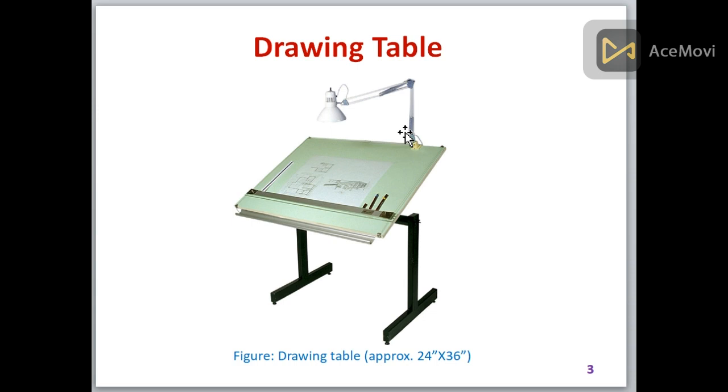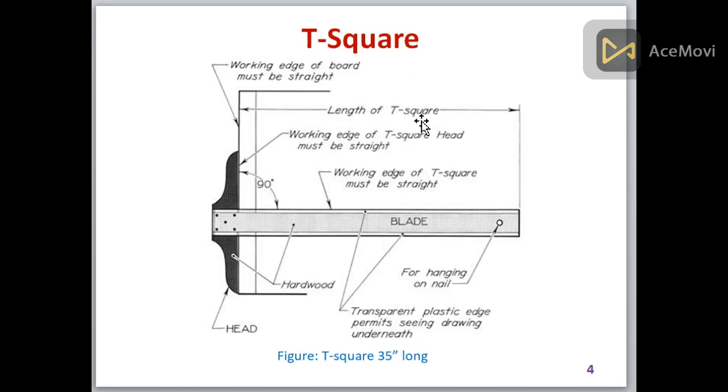First of all, we will discuss some instruments. This is a drawing table. You may have seen it in your drawing labs, but if you haven't, this is the structure of a drawing table. There is a board on it where we place our paper or drawing sheet, and also there are holding places for pencils and paper. Sometimes you can add a lamp on it.